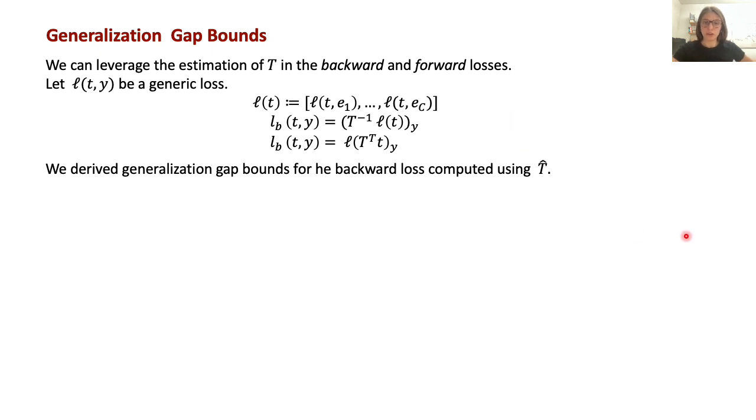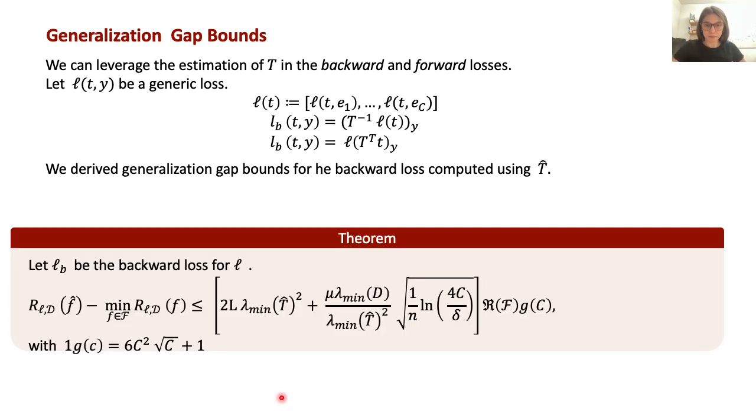Another approach to utilize the estimate of T is through the use of robust loss functions that require the noise transition matrix, such as the forward and backward loss functions introduced by Patrini and others in 2017. In the case of backward loss, that is an unbiased estimator of the original loss, we were able to provide some generalization bounds for the excess risk. So this theorem provides a performance bound for the classifier obtained by minimizing the backward loss and depends on the Rademacher complexity of the space of functions. The significance of the bound lies in the fact that they don't rely on the knowledge of the true noise transition matrix of the annotators like previous approaches, but only on the estimated T. That is actually the only information we can obtain from the datasets.